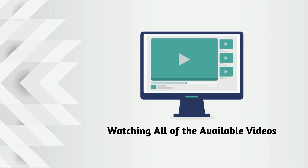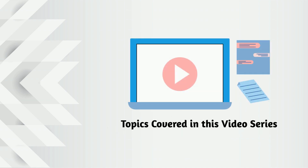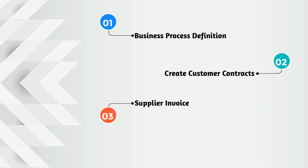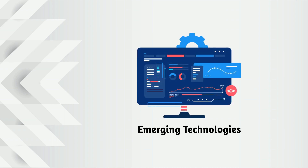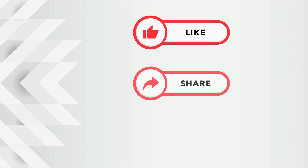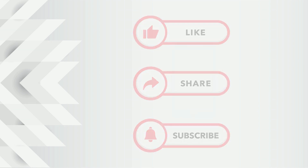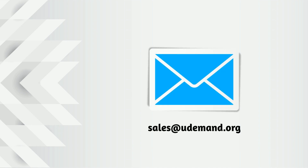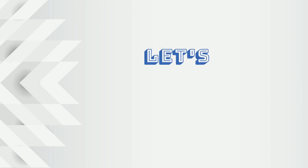Get the whole idea by watching all of the available videos. Following are the topics covered in this video series: Business Process Definition, Create Customer Contracts, Supplier Invoice, and Reporting. In order to learn more about emerging technologies, kindly give the channel a like, share, and subscribe. Contact us for more details at sales@udemand.org. Let's get started.